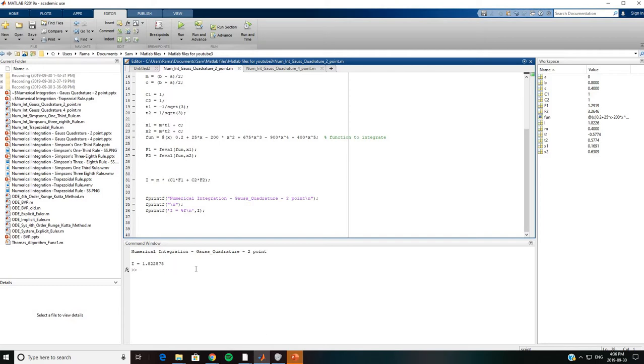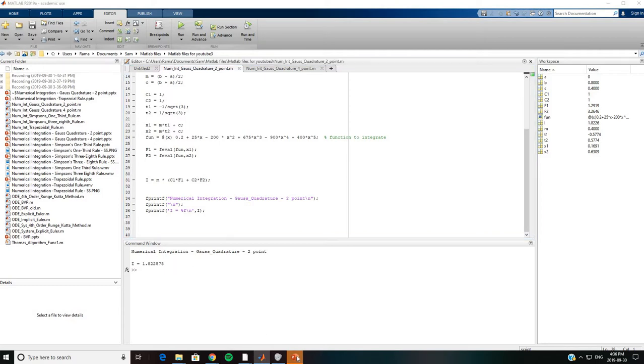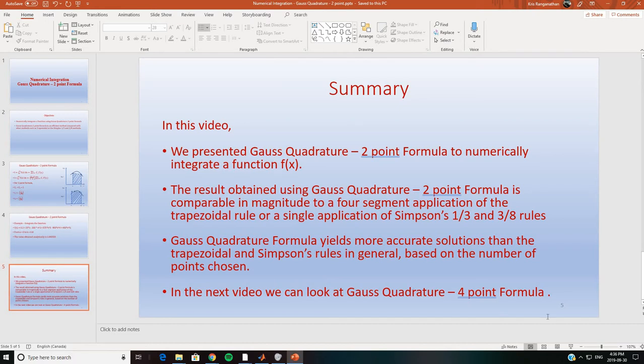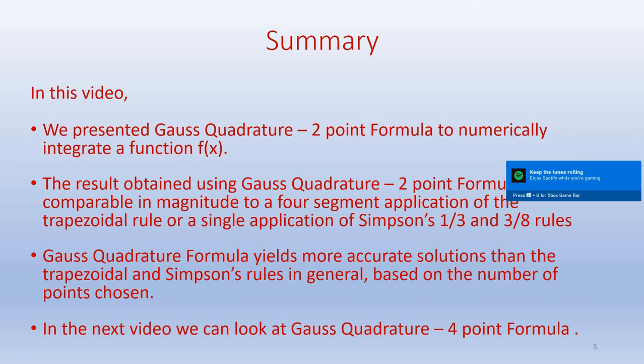To summarize, in this video we presented Gauss Quadrature two-point formula to numerically integrate a function f(x). The result obtained using Gauss Quadrature two-point formula is comparable in magnitude to a four segment application of the trapezoidal rule or a single application of Simpson's one-third and three-eighths rule.